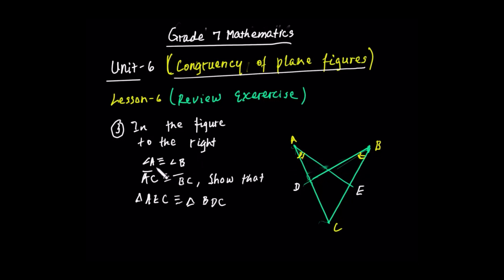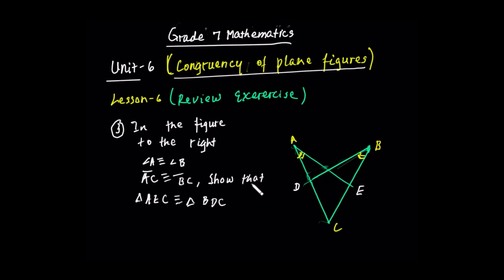We have to show that you get to the right side of this angle. Segment AC is congruent to segment BC. So that shows that, with this given condition, triangle AEC is congruent to triangle BDC. Here is the triangle.